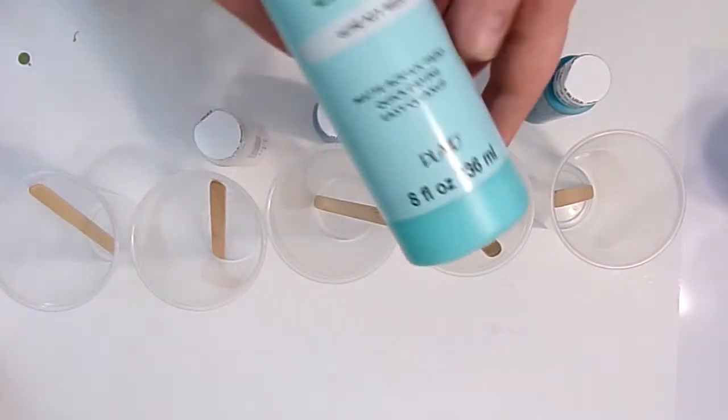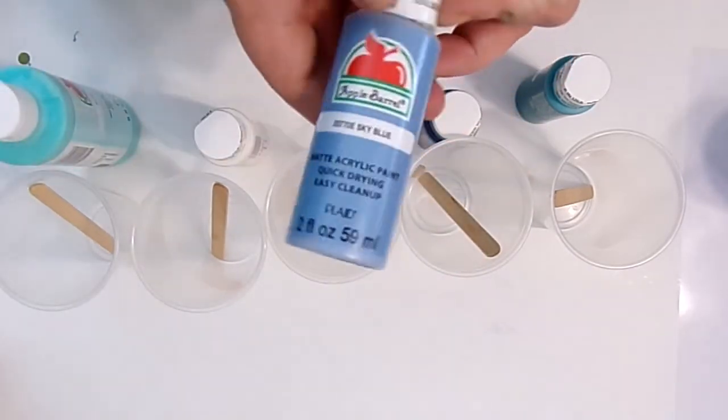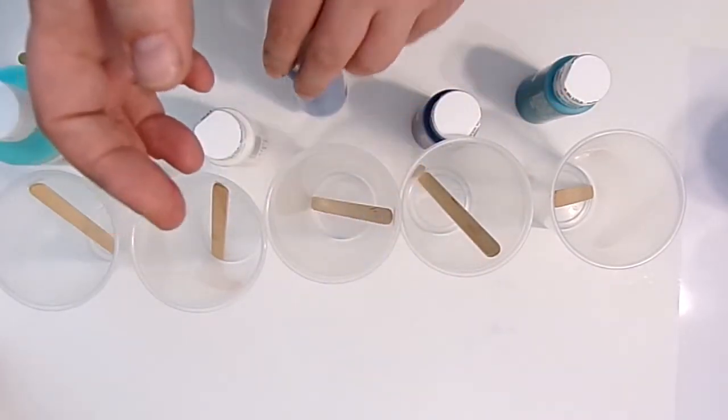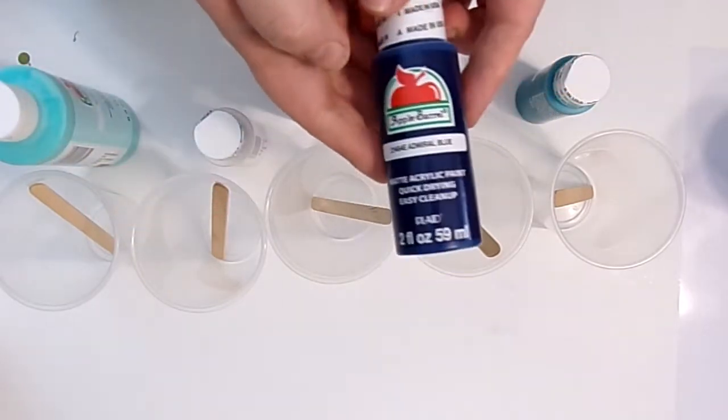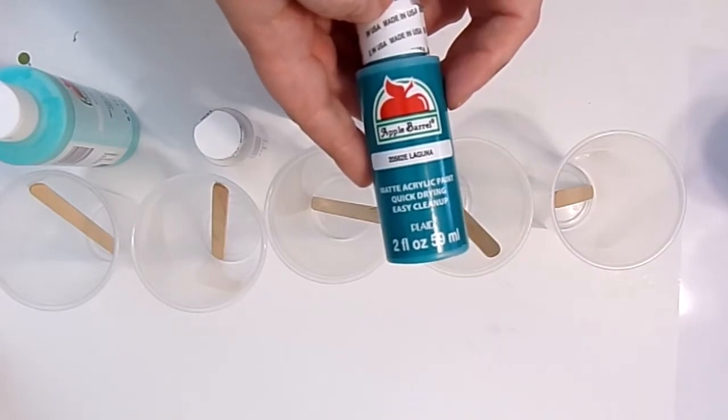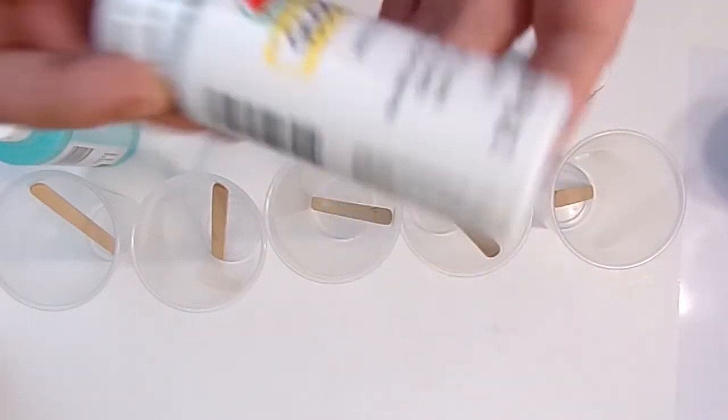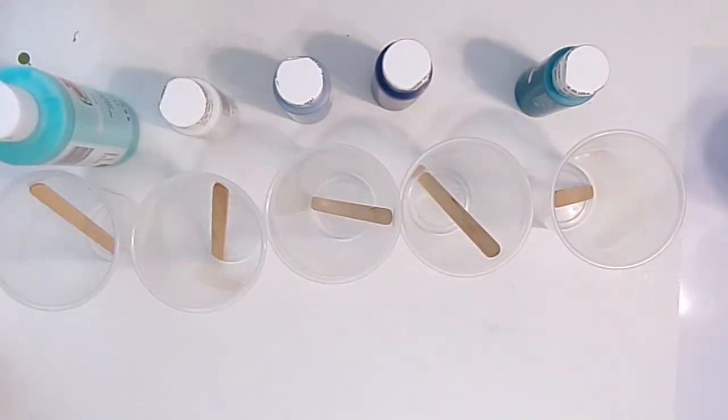So we're going to use some of our Key West, some of our Sky Blue, some of our Admiral Blue, some of our Laguna, and some of our Gloss White. Okay, these are all Apple Barrel and the supplies were all in the first episode.